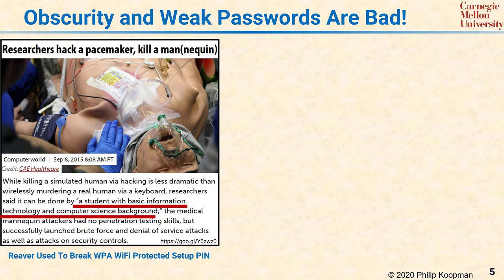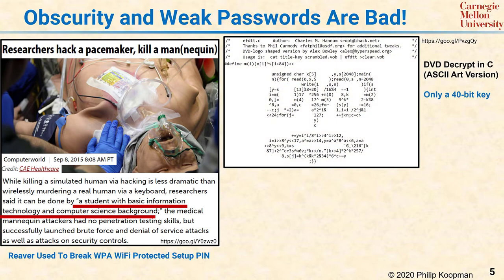Back in 1999, DVD movie protection was broken when it was discovered that only a 40-bit encryption key was being used, and at that, only some of the key values were actually potentially valid. That enabled a brute force attack, which could be implemented by programs so simple that people turned them into ASCII art, like a picture of a DVD logo that is actually the decryption program.